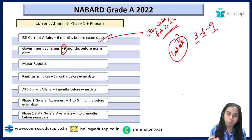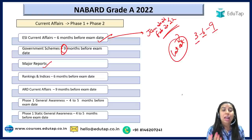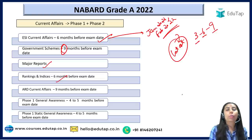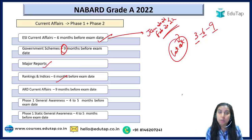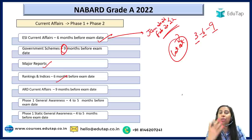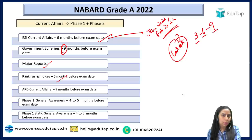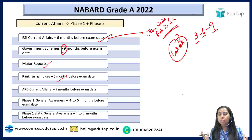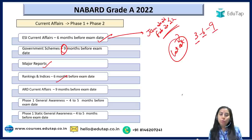Then comes major reports. Rankings and indices released by various international bodies of stature — World Bank, WTO, IMF, FAO, United Nations — their reports you should definitely cover. Plus at India level, reports released by NITI Aayog and some important NGOs should also be covered.